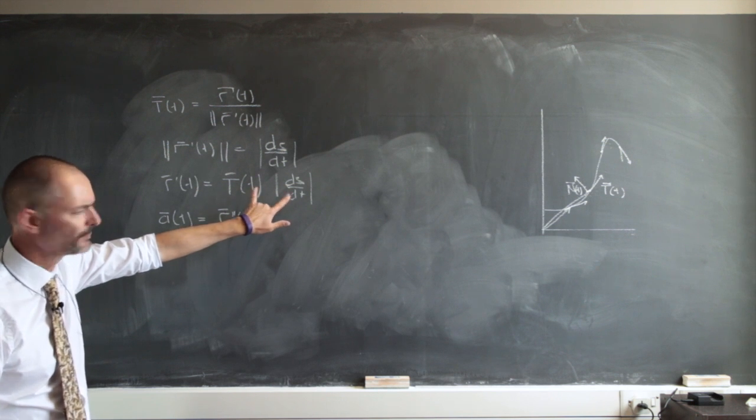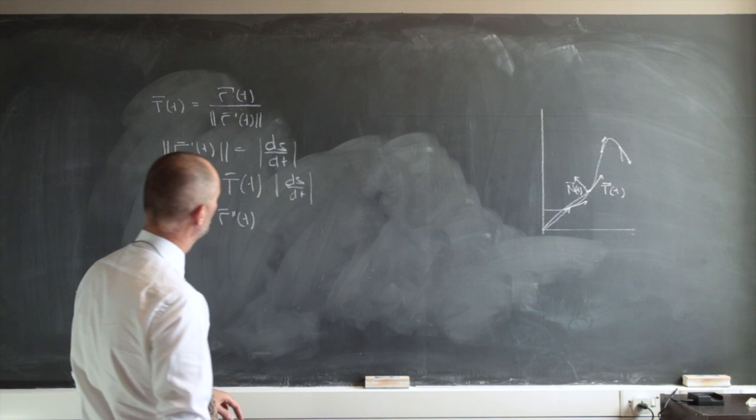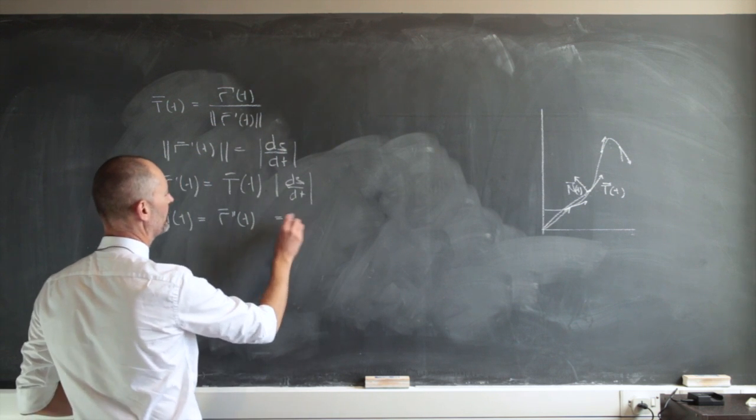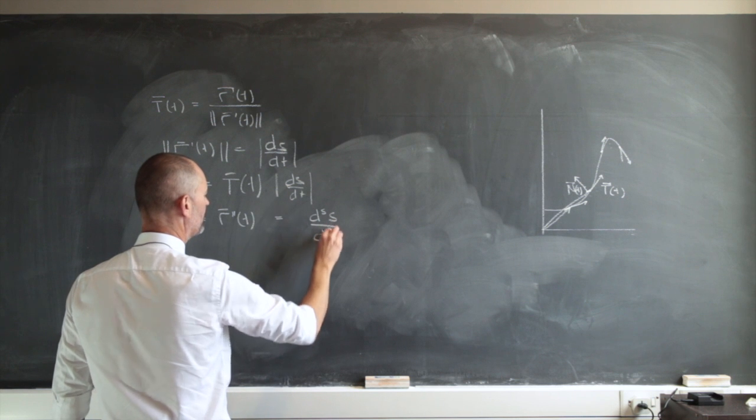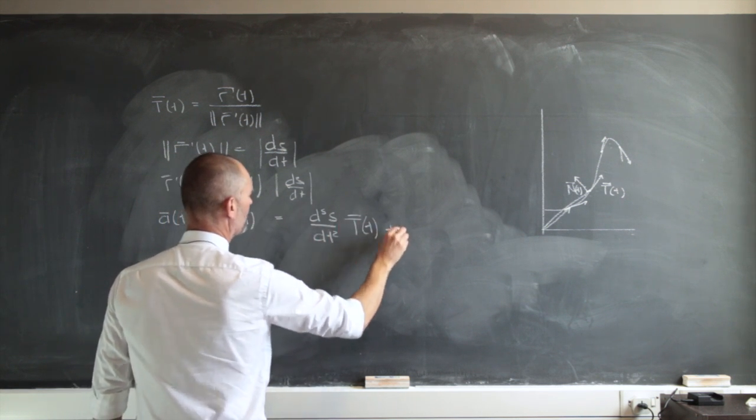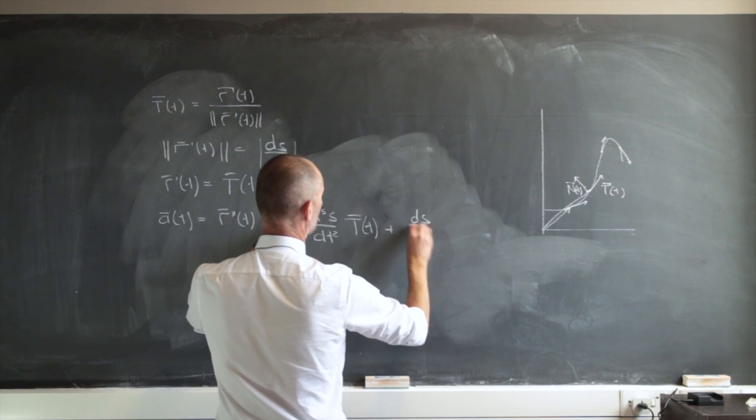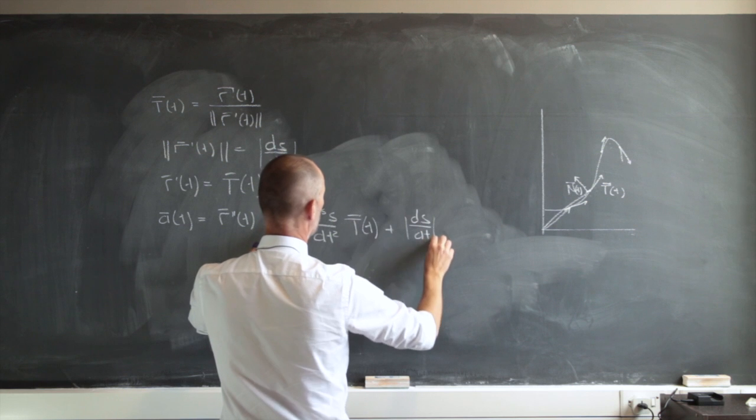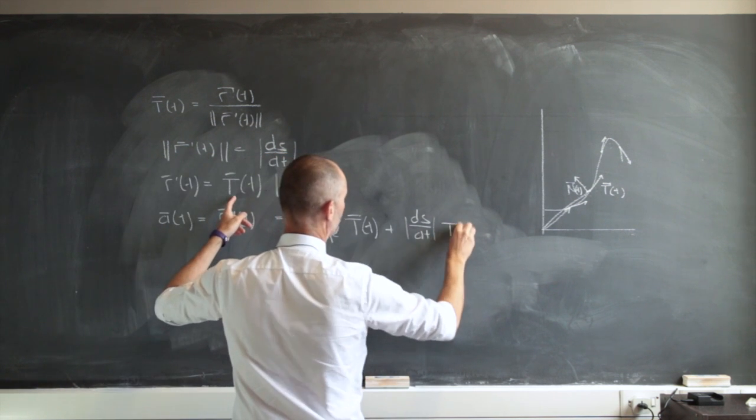But if you think about it, I have to do the product rule there. This is the product of two functions. So let's do that. So that's going to be the second derivative, dt squared t of t, plus I'm going to have ds dt, ds dt there, and the derivative of this, t prime of t.